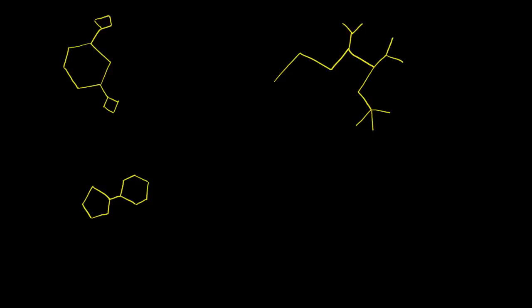I've pre-drawn some molecules here. Let's see if we can use what we know to name them. So what do we have? This first molecule right here, I have a bunch of rings. This is a 1, 2, 3, 4, 5, 6 carbon ring.